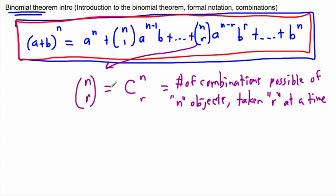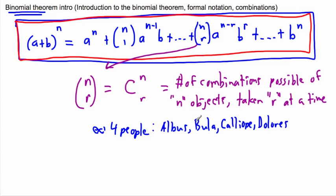What I'd like to do is show you a little example of what I mean by this. Let's say you have four people. Keep in mind, I'm not showing you how to work with this now. We're just dealing with this thing right here for now, this n choose r. Let's say we have four people. We're going to call them A, B, C, and D. Maybe the names are Albus, Beulah, Calliope, and Dolores. They're just handily named A, B, C, and D.